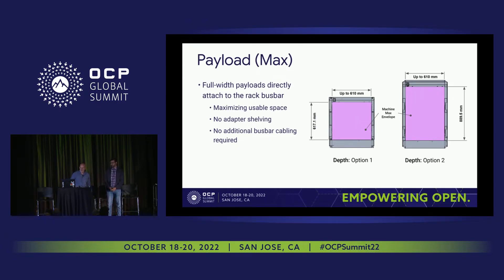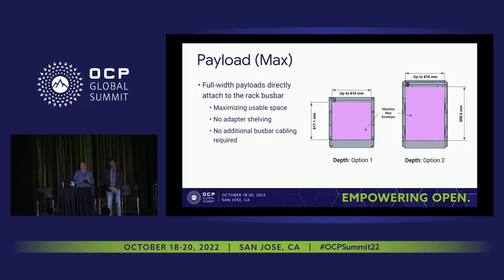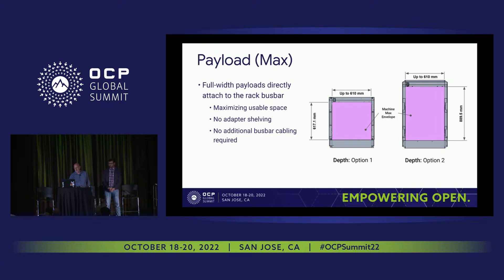In the rack, if we wanted to do what I would call a maximum dimension payload, we're using the entire 610 millimeter width of our internal dimensions of the rack. For deployments where you want to maximize number of servers, there's overhead in the rack — sheet metal and power — which is divided by your number of servers. When you want to maximize your number of equipment inside, you would do a maximum width and direct connect to the bus bar. That would be achieved with floating connectors on your payloads, direct connect to the bus bar, full width — so there's no adapter shelving or anything required.